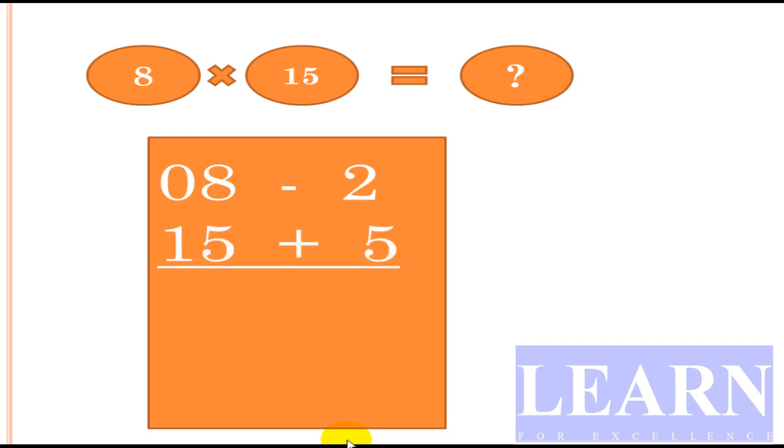We'll write 8 and 15 in the same order. 8 is 2 less than base, so 8 is -2, and 15 is 5 greater than the base. Now how to solve this? We have to do cross addition: 8 + 5 or 15 - 2, anything is okay. So 15 - 2 gives 13, that is 130. Next, look here, we have one minus sign. 2 × 5 is 10. Since we have a minus sign, we write it as -10. So 130 - 10 gives 120. Our final answer is 120.